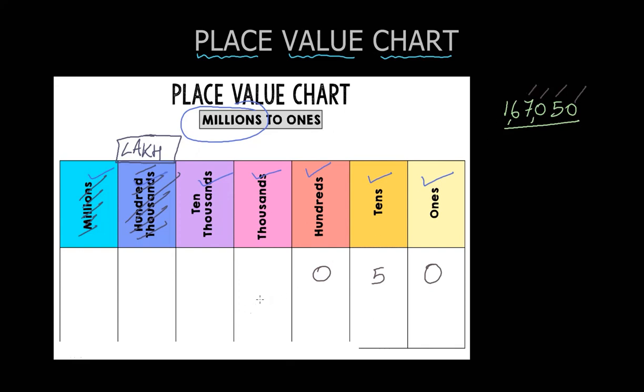Thousands place I am having seven. I wrote down seven. Ten thousands place I am having six. And in the lakh place I am having one. So this is the way I am representing a lakh number, that is one lakh 67,000 and 50, on a place value chart.